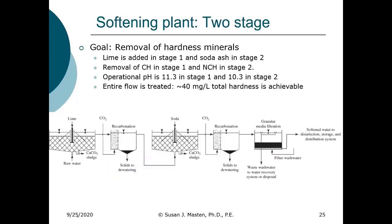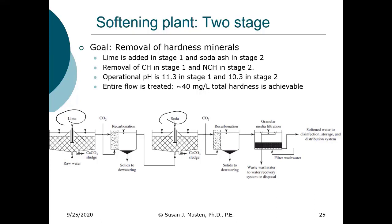We can also use a two stage approach. In both the previous case and this case, the entire flow is being treated. In the first stage we're adding lime, and then we're adding soda ash in the second stage. So we're looking at removal of carbonate hardness in stage one — reactions 1, 2, and 3. And then in the second stage, we're looking at removing the noncarbonate hardness due to magnesium, reaction 5. We're only adding soda ash.